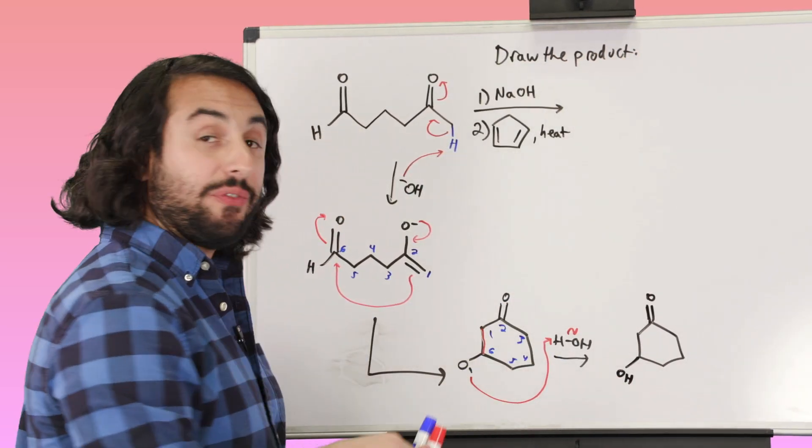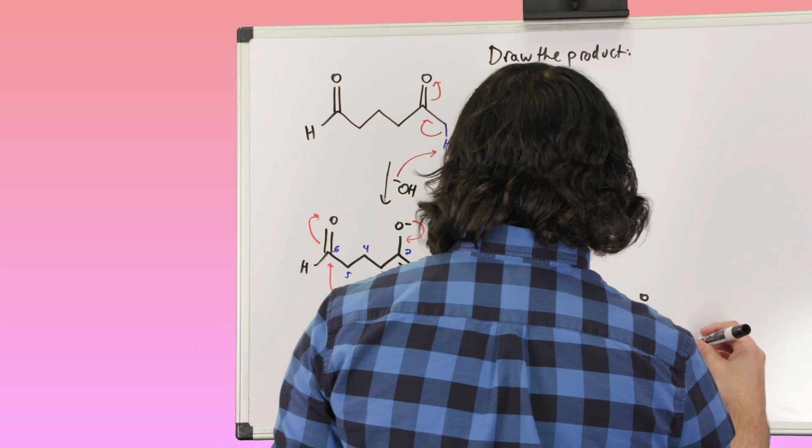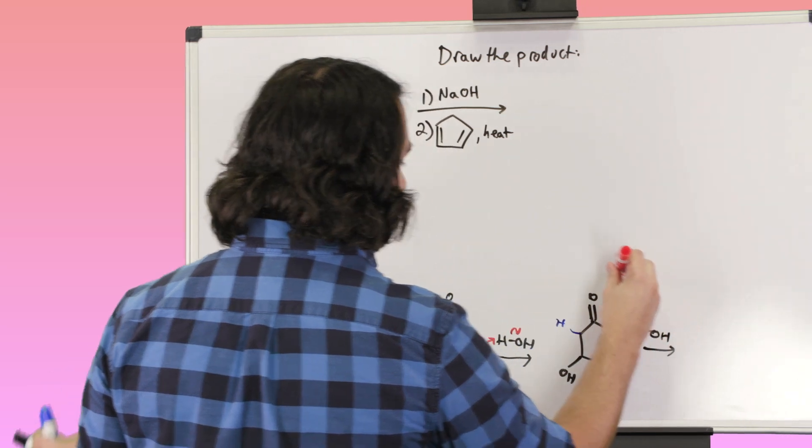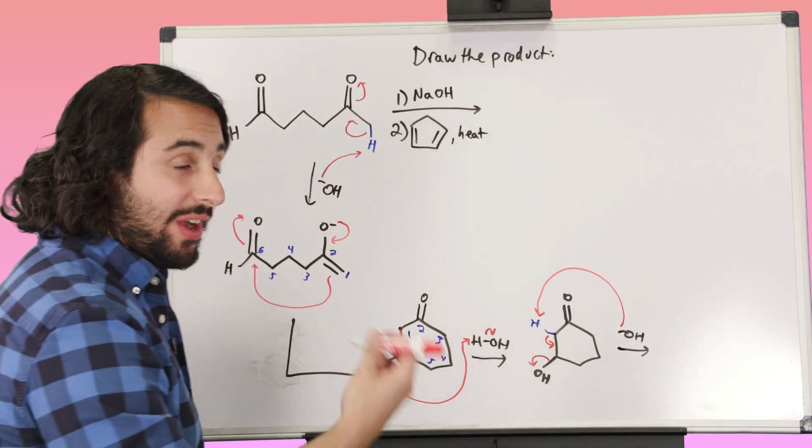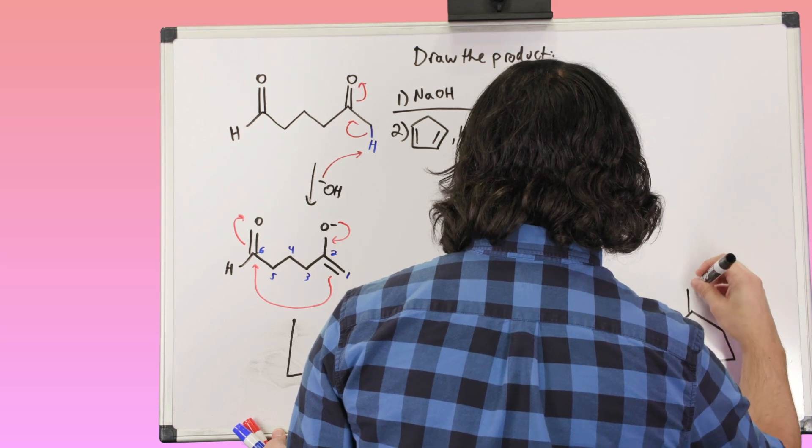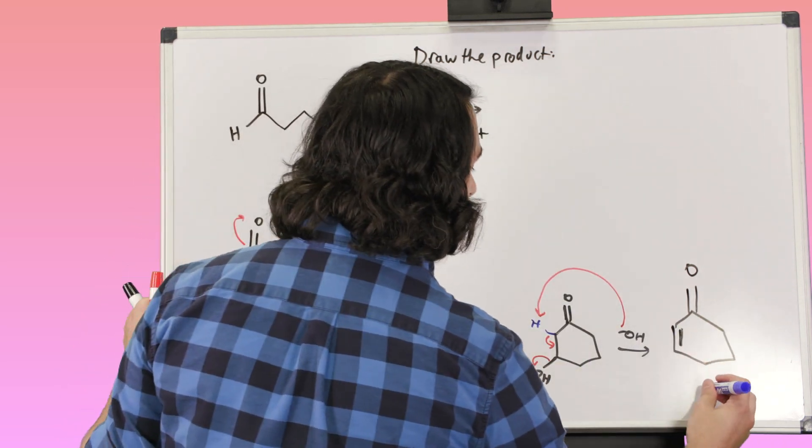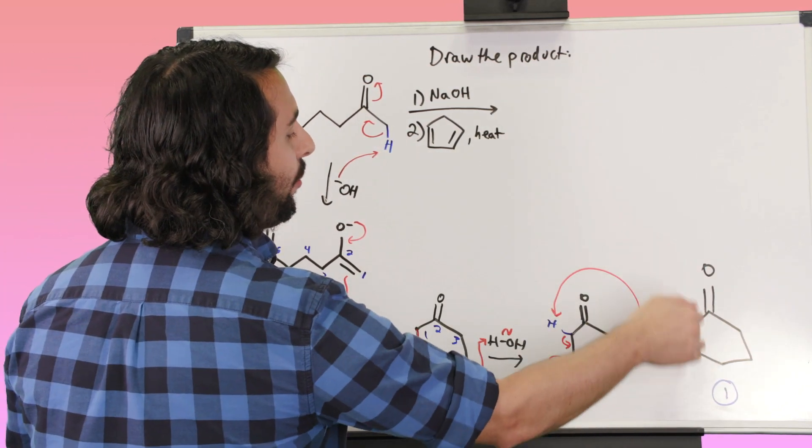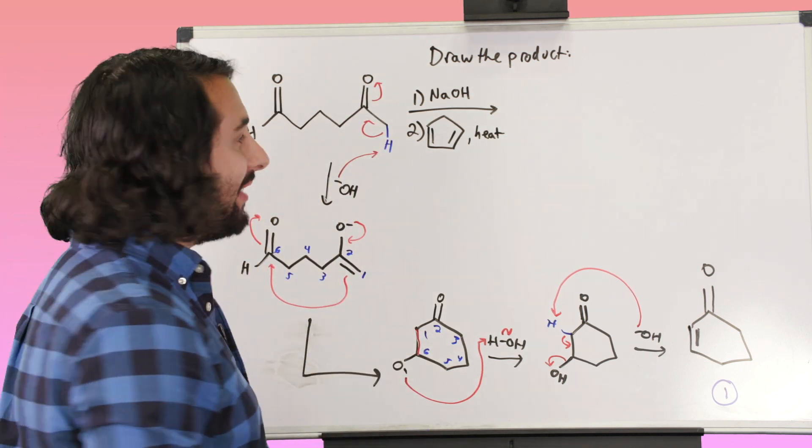And we'll get our aldol addition product. And then we know that from the aldol addition product, we can just go ahead and get the aldol condensation product. So let's take some more base. And let's go ahead and get that proton and kick this off. We're in strong base, so another hydroxide is not going to hurt. And we'll do this. So that is the product of number one. Number one is getting us to this six-membered ring where we have the carbonyl reformed. We've got that pi bond. That's the product there. It was this intramolecular aldol condensation.